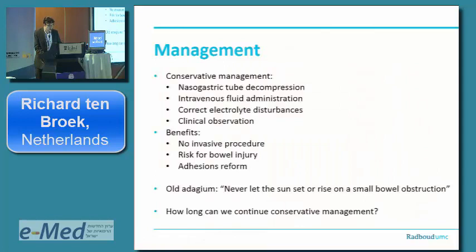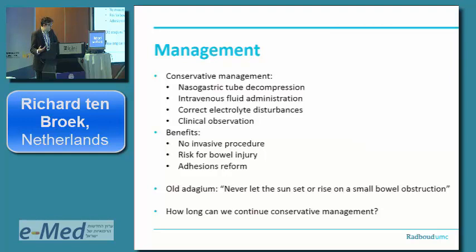And then we come to the management. How long do we attempt conservative management? Conservative management consists of a nasogastric tube for decompression, intravenous fluid administration, and correction of electrolyte disturbances with clinical observation. It has natural benefits: adhesions are caused by an operation, so if you're going to do a new invasive procedure, you must consider that during the operation there may be unintended bowel injuries and adhesions reform. What will prevent the adhesions from reforming and having the patient come back again with adhesive obstruction? Those are the benefits of conservative management.